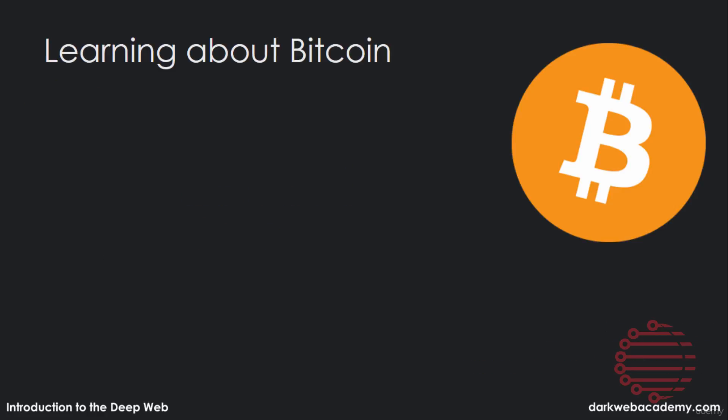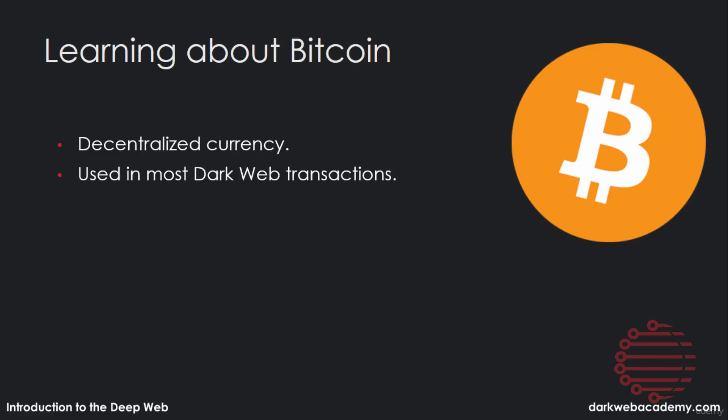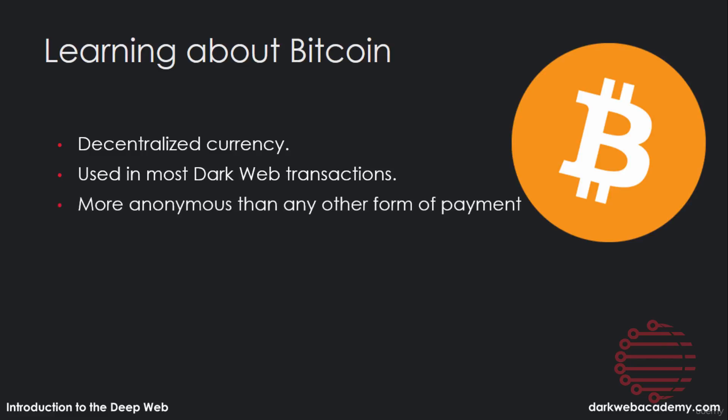If you don't know what Bitcoin is already, Bitcoin is a decentralized cryptocurrency, which means it's not physical money — it's used on the internet. It's used in almost all dark web transactions, and it is more anonymous than any other form of payment. However, if someone says Bitcoin is completely anonymous, they'd be wrong. It's not completely anonymous, but compared to using your credit card or PayPal, it's far better.